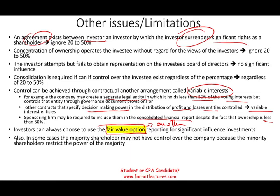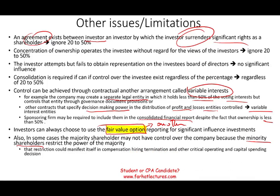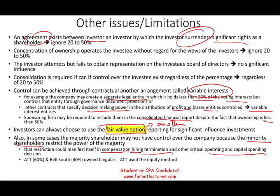In some cases, the majority shareholder may not have control because minority shareholders restrict the majority's power through agreements — for example, restricting compensation, hiring, termination, and capital budgeting decisions. If minority shareholders can dictate these things, you might have the majority of shares but not control the company. A real example is AT&T: when AT&T and BellSouth owned Cingular, AT&T owned 60% and BellSouth 40%, yet AT&T used the equity method because the agreement between them restricted AT&T's ability to exercise complete control, even though it owned more than 50%.